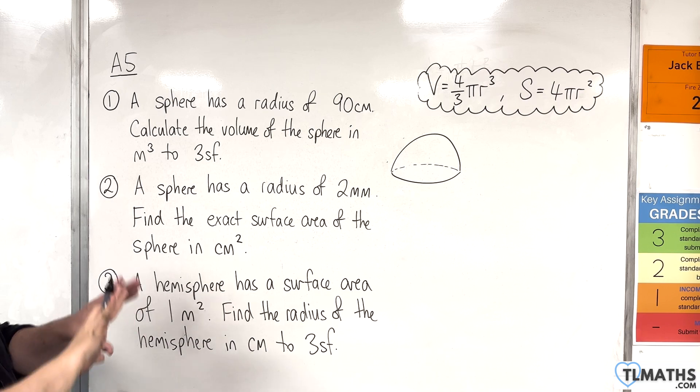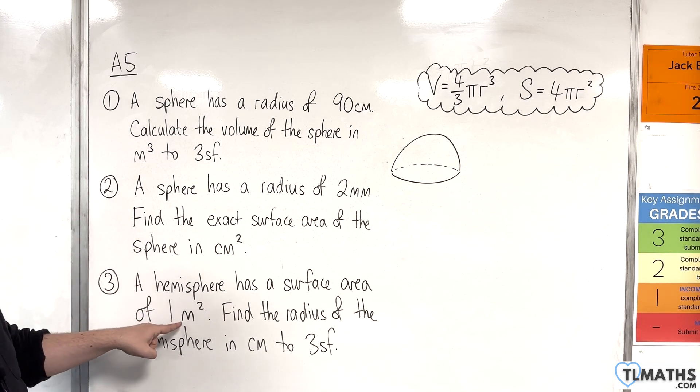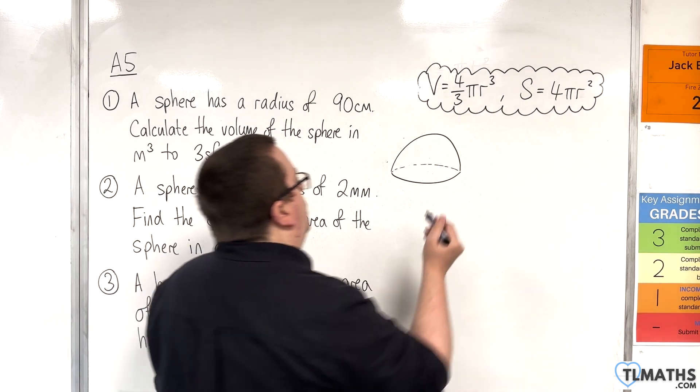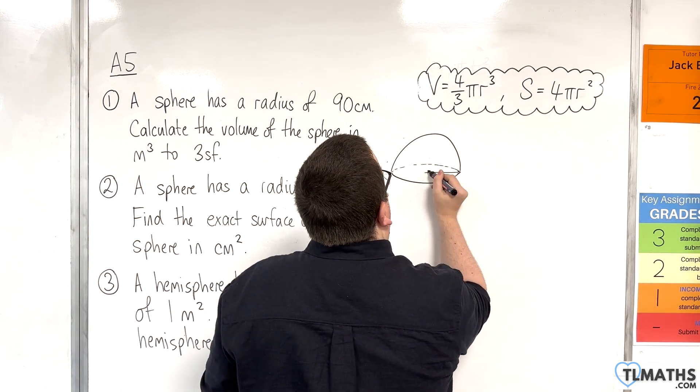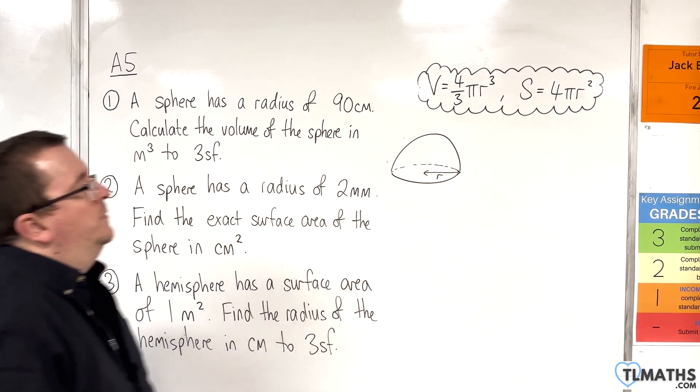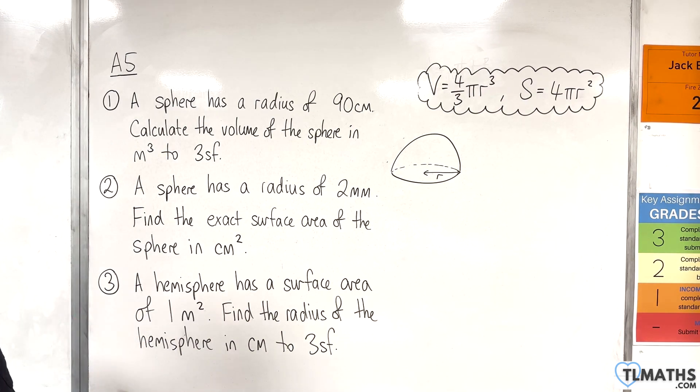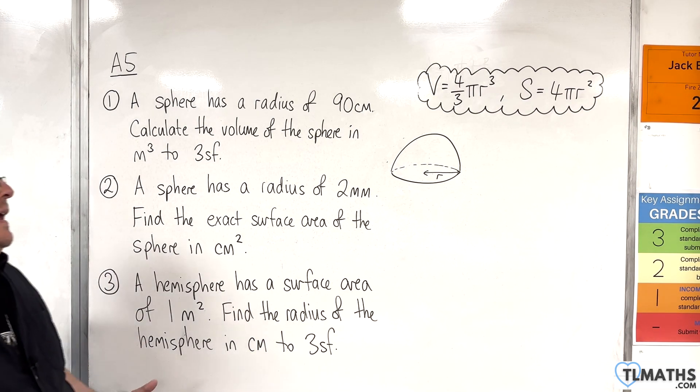Now, we know that the total surface area is one square meter. We want to work out the radius. So really, what I need is a formula for that surface area of the hemisphere.